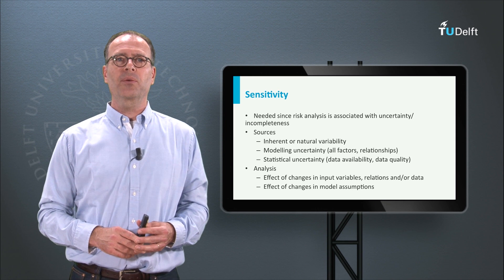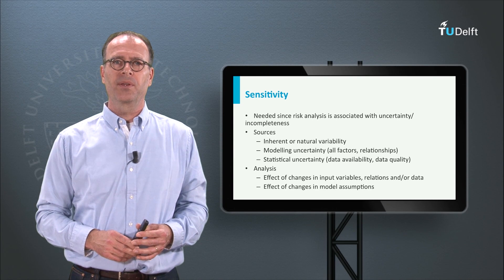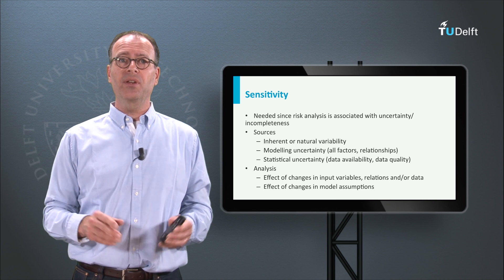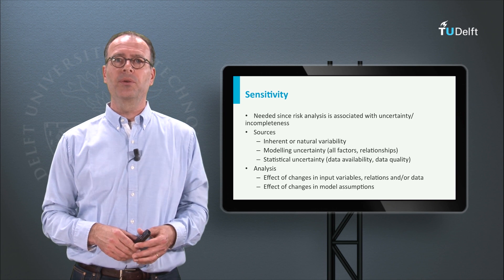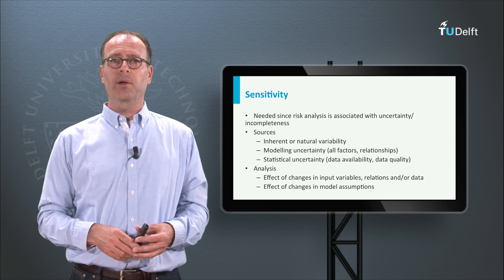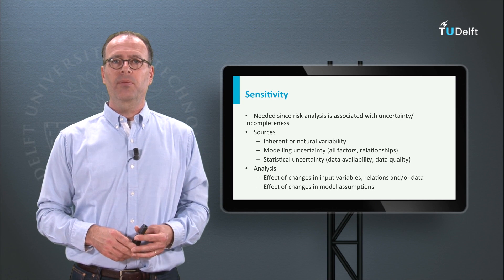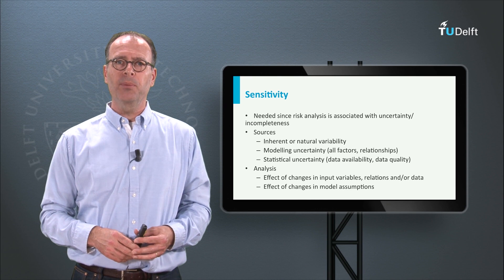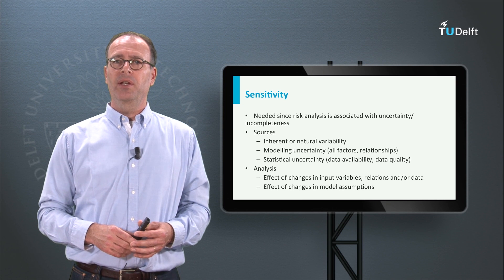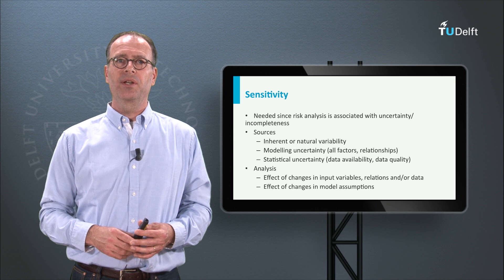We might want to do sensitivity analysis as well, to see if our analysis makes enough sense. We can take a closer look at our data sources. Did we take account of the variability present in our system? Did we capture all factors and relationships? How about the quality of the data we have used? We can also look more closely at our analysis — what happens if our input variables change, or the relationships that we have modelled? In each model we need to make assumptions, and we need to know what happens if our assumptions are wrong. How does the risk increase then?